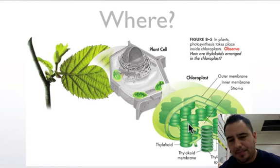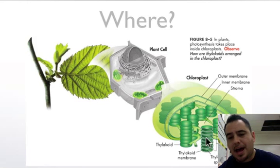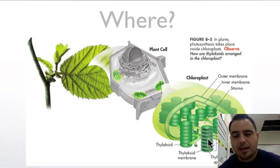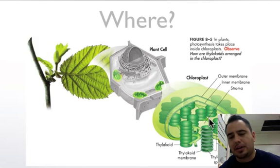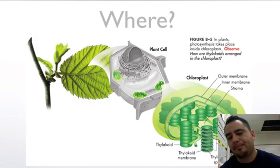Each disc is called a thylakoid — it looks like a cookie. A stack of thylakoids is called a granum. The liquid-filled area surrounding the thylakoids inside the chloroplast is called the stroma.